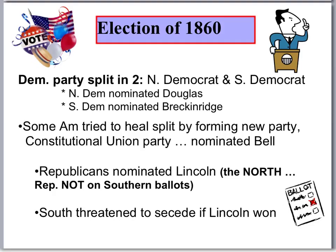The Democrats hold their convention in Charleston, South Carolina, and of course they can't agree. The South wants them to nominate a candidate who's going to promote the expansion of slavery into the territories, but the northern Democrats aren't going to do that. So the northern Democrats nominate Stephen Douglas from Illinois — at one time considered the frontrunner. The southern Democrats nominate John Breckinridge, who is a proponent of slavery and its expansion into the territories. Meanwhile, some Americans still hoping to preserve the Union and avoid secession and civil war form a new party called the Constitutional Union Party, nominating John Bell — the guy with the glue bottle trying to hold the nation together.